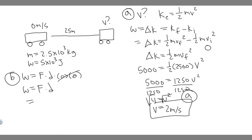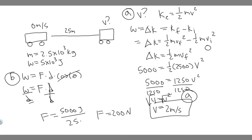So if we divide both sides by the distance, force equals work divided by distance — 5,000 joules divided by 25 meters — which gives 200 newtons. The units work out because joules divided by meters gives newtons. So the force exerted on the car by the mechanic is 200 newtons. That's your answer to Part B. Hopefully you found this useful.